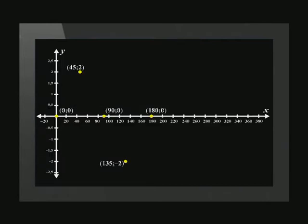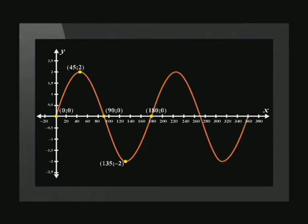First we plot the points, then we join them with a smooth line and continue the graph until 360 degrees. Let us try another example.